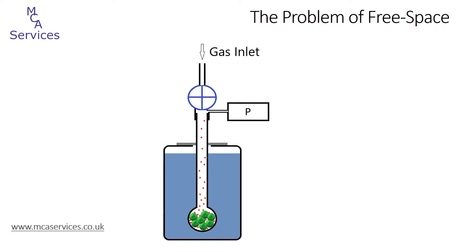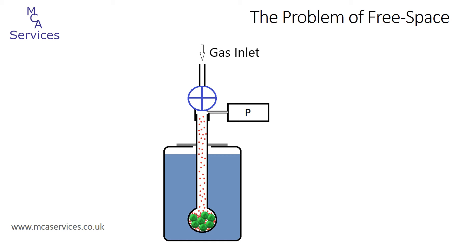The problem with low surface area materials is that the volume adsorbed onto the sample becomes very small relative to the analysis tube free space volume. As we increase the relative pressure we find that although the volume adsorbed onto the sample increases, so too does the volume and therefore the number of molecules in the free space. Once the number of atoms or molecules adsorbed onto the sample becomes very small relative to the number within the free space, we can no longer ascertain the number adsorbed to the sample accurately. At this point we can no longer gather reliable and accurate adsorption isotherm data.